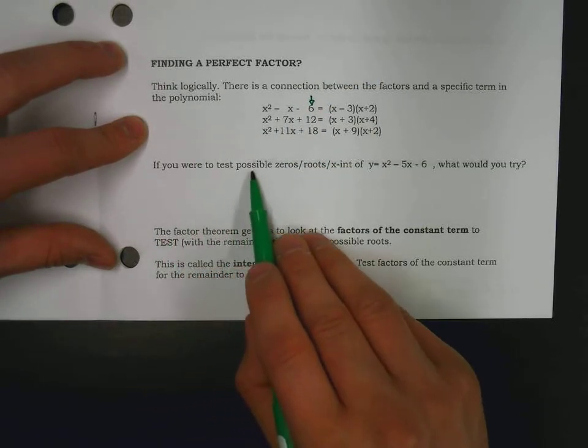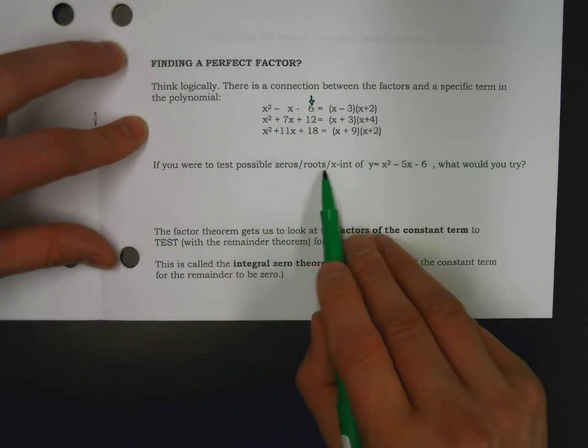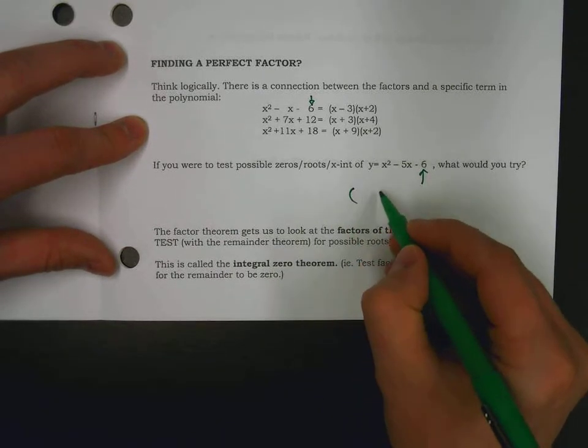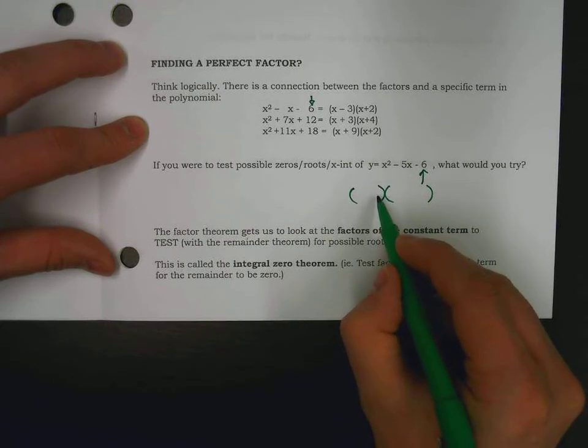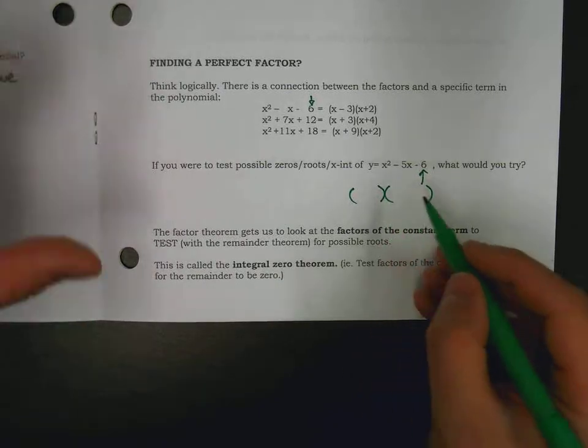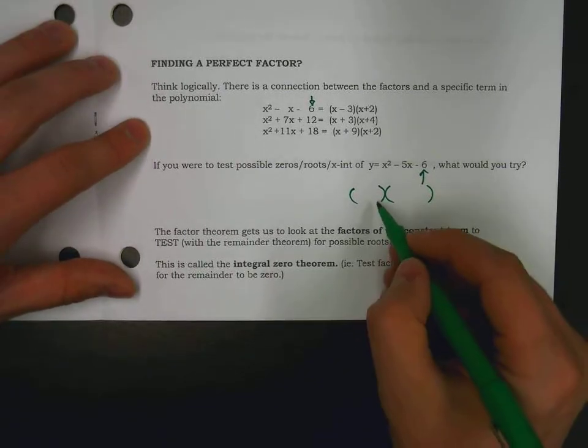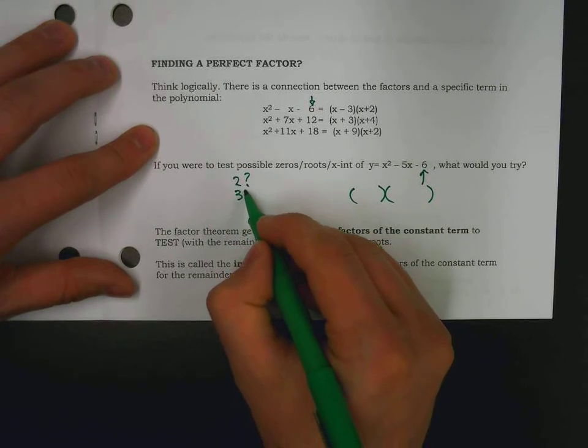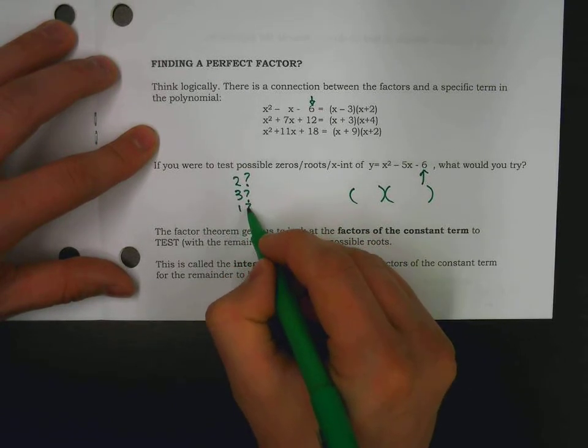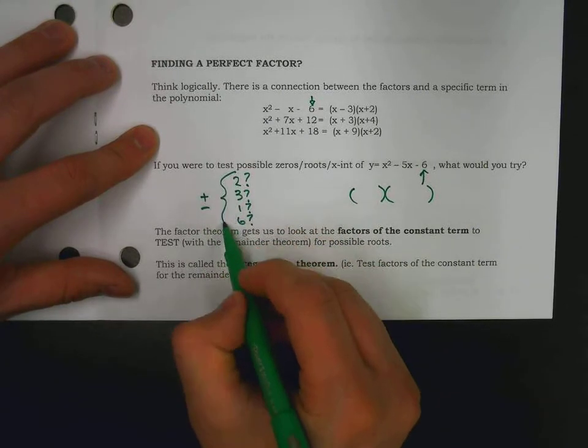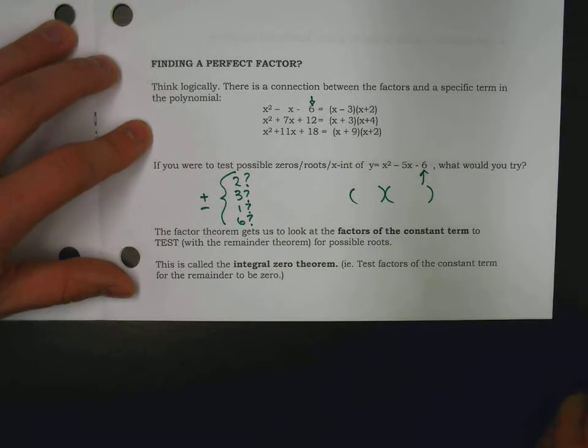So, if you were to try to figure out possible zeros or roots or x-intercepts, what might you try? Well, I would look at this and I would know that in the binomials, the last numbers are either going to be a six and a one or a three and a two. Positive or negative, of course. But I might be saying, well, maybe it's going to be a two. Maybe it's going to be a three. Maybe it's a one. Maybe it's a six. Maybe one of those and a positive or negative version of all of those.